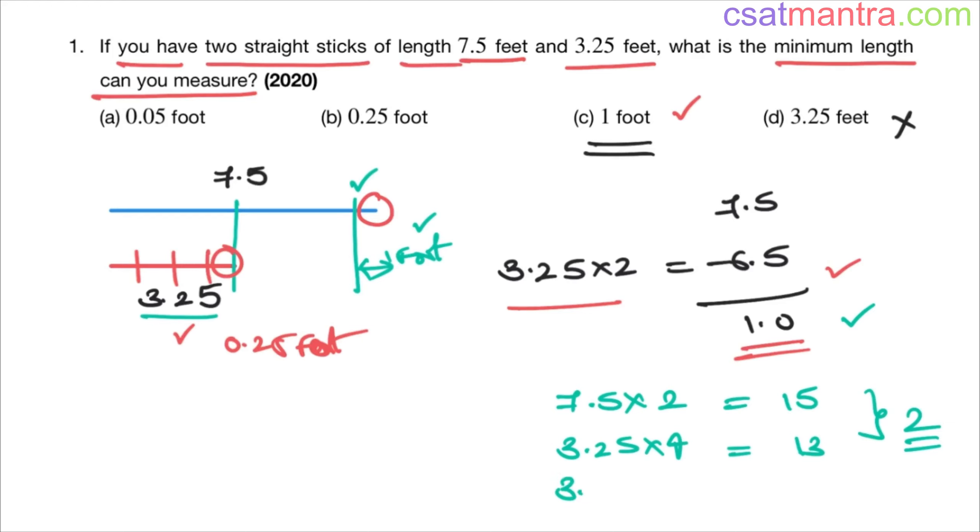So 3.25 into 5, this is 16.25. The difference is 1.25. 15 and 16.25, the difference is 1.25. Again this is of no use. We are checking whether we can get less than one or not.